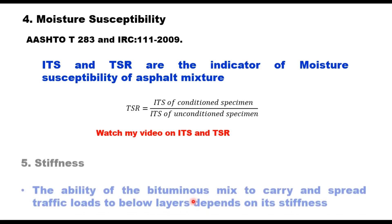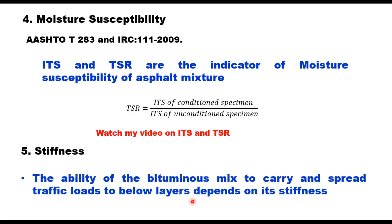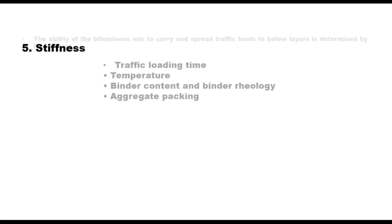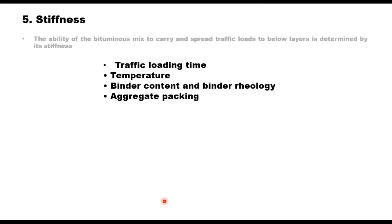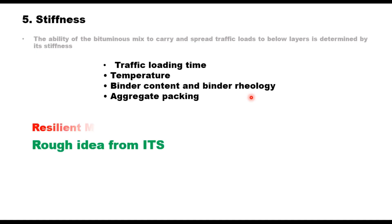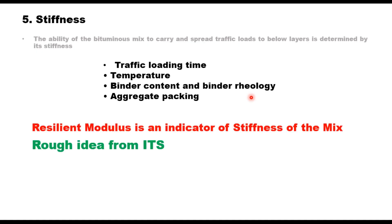The fifth factor is stiffness — the ability of the bituminous mix to carry and spread traffic loads to underlying layers. Key factors affecting stiffness include traffic loading time, temperature, binder content, binder rheology, and aggregate packing. Resilient modulus (Mr) is an indicator of stiffness of the mix.